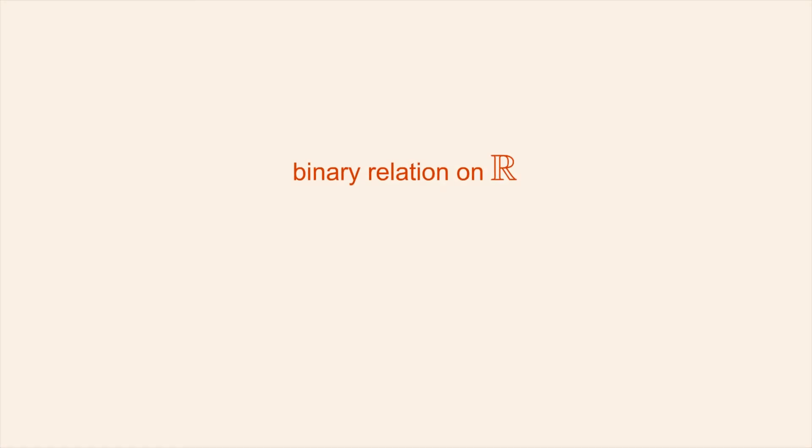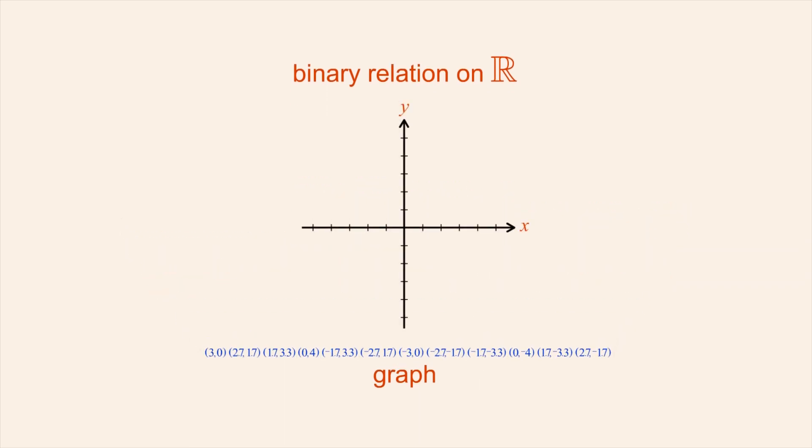The ordered pairs which represent a binary relation on R are pairs of real numbers. This set of ordered pairs is sometimes referred to as the graph of the relation. And since Cartesian coordinates can be used to visually represent ordered pairs of real numbers this is a way to visually represent the graph of a relation on R.